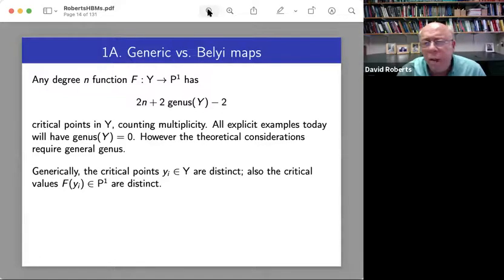All right, so let's think about a generic map. So the critical points upstairs are typically distinct. And the critical values downstairs are distinct also. So like what I have in mind is maybe a degree 100 polynomial randomly chosen over another degree 100 polynomial randomly chosen.